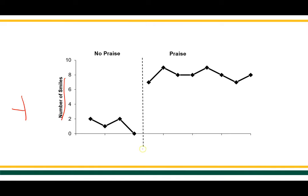Along the x-axis — the horizontal axis along the bottom — is typically going to be a time measurement. Now this one is blank but it could be sessions, days, weeks, something of that nature. What I'm showing you is a baseline condition here, four observations in a no praise condition.